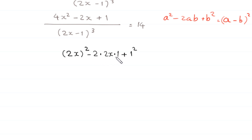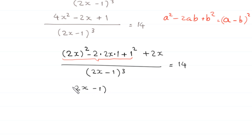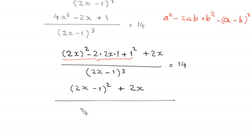In the original expression we have negative 2x, but applying the identity gives negative 4x. To balance this, we add 2x to the numerator. By the algebraic identity, (2x)² - 2(2x)(1) + 1² becomes (2x-1)². So the expression is [(2x-1)² + 2x] / (2x-1)³ = 14.